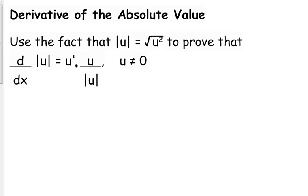We are going to use that fact to prove that the derivative of the absolute value is equal to the derivative of what's inside the absolute value times what's inside the absolute value over the absolute value. Obviously, when what's inside the absolute value is not equal to zero, because we can't divide by zero.